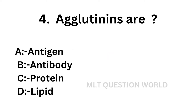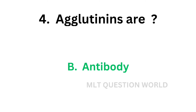Question number 4: Agglutinins are — option A: Antigen, option B: Antibody, option C: Protein, option D: Lipid. Which of the following are called agglutinins? The correct answer is option B, Antibody. Agglutinins are antibodies.